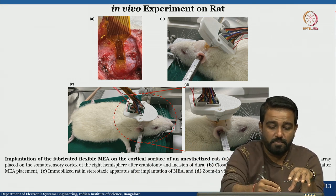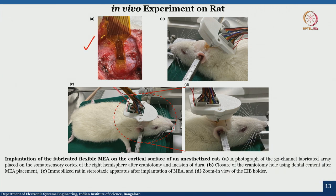When the device is implanted onto the rat's brain, the recording electrodes are in contact with the brain surface. Once placed, the dura is put back, and multiple screws are used — one for reference, one for ground — followed by placing the bone removed during craniotomy back on the brain and applying dental cement. The remaining part of the device comes out and is connected to the EIB holder.